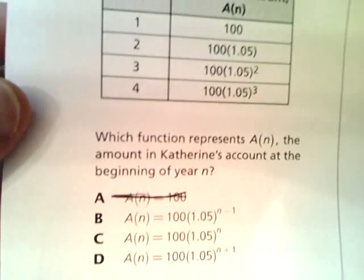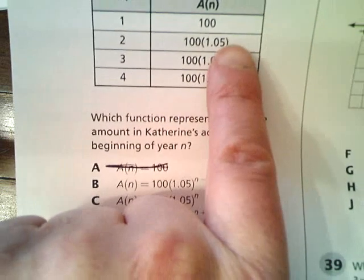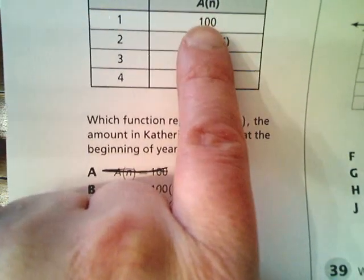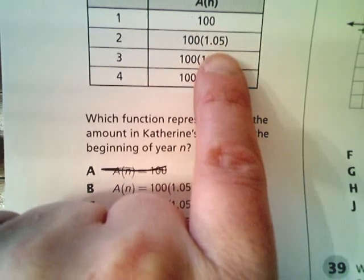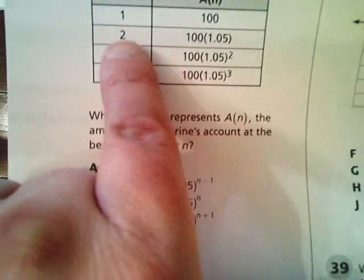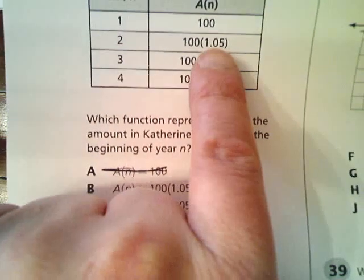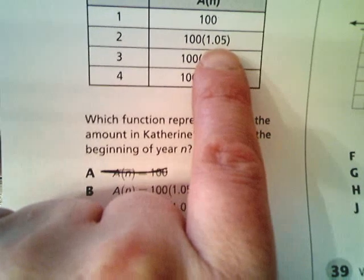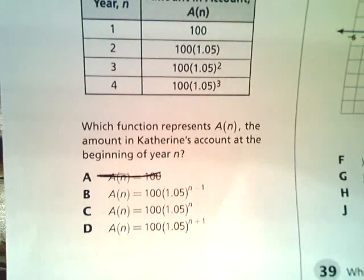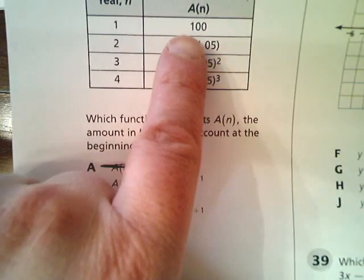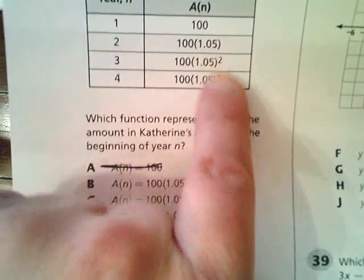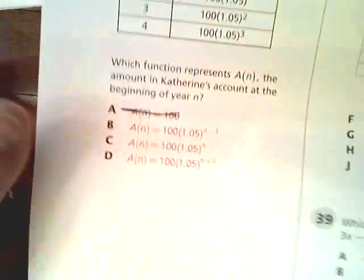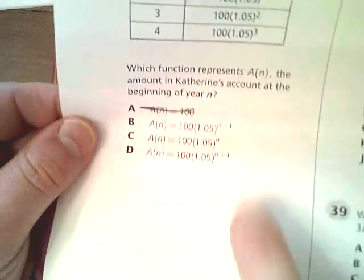Look at the question itself — don't overthink it. The only thing that is changing is the exponent: 1.05 to the power of 0 gives year 1, times 1 gives year 2, so that's 2 minus 1. And 1.05 raised to the 0 power gives you 1, which leads to 100. The exponents going up are always 1 less than the year value, so you're looking for the option that gives you n minus 1.